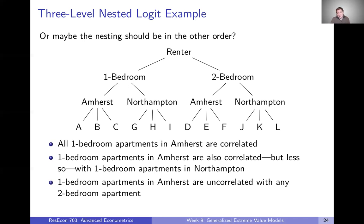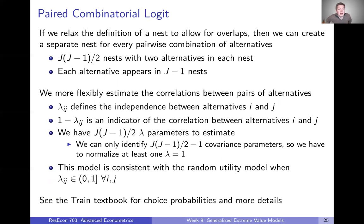We still have to make decisions about what's a nest and what's a sub-nest. Maybe you want to allow a one-bedroom apartment in Amherst to be correlated with both one-bedroom apartments in Northampton and two-bedroom apartments in Amherst — correlated whenever alternatives share any attribute. To get that, we'd need something more complicated. One option is the paired combinatorial logit, where we relax the definition of a nest to allow for overlaps.